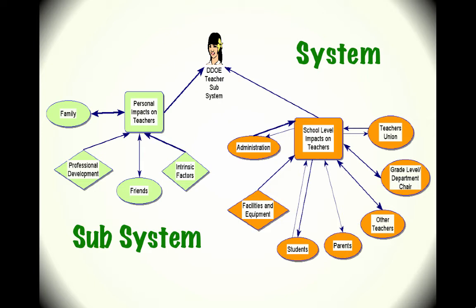Here is our subsystem — the teacher — as well as our system. With the Department of Education, you have personal impacts on the teachers: family, professional development, friends, and intrinsic factors. At the school level, you have administration, facilities and equipment, students, parents, other teachers, grade level, department chair, and a teachers union. Notice that some of the non-human aspects are only one way.